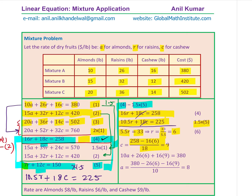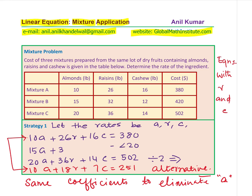Once r = 6, substitute into equation 4 to find the value of c. Then substitute the values of r and c into equation 1 to find the value of a. Rearranging gives us our solution: almonds cost $8 per pound, raisins cost $6 per pound, and cashews cost $9 per pound in this example.